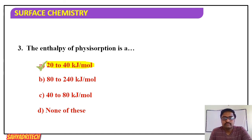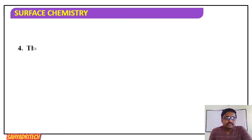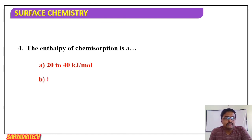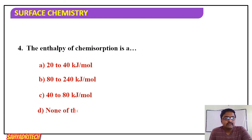Fourth MCQ: the enthalpy of chemisorption is — options: A) 20 to 40, B) 20 to 240, C) 40 to 80, D) none. The answer is 80 to 240 kilojoules per mole, option B.